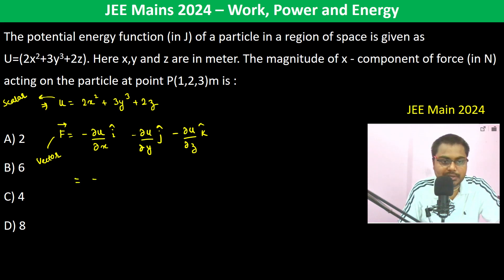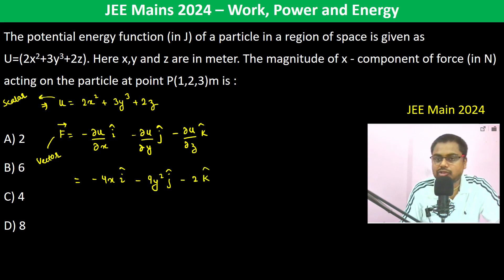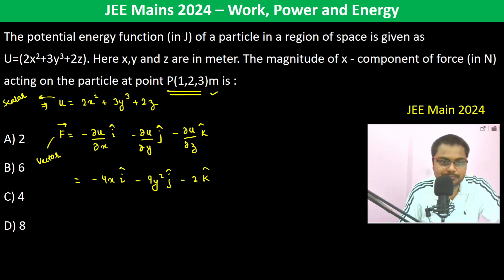So the force is going to be minus 4x î minus 9y² ĵ minus 2k̂. Now the x-component of the force acting at point P(1, 2, 3) — we have to substitute these values.